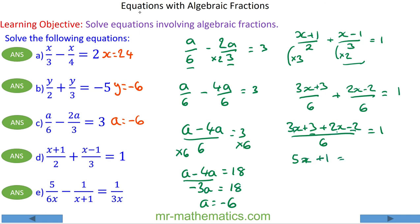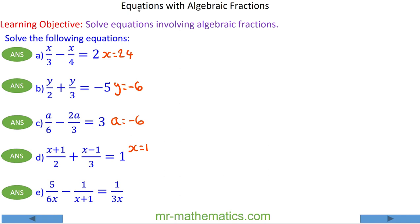So 3x add 2x equals 5x, 3 take away 2 is 1, and that is equal to 6. I can move the division of 6 to the other side, so 5x will equal 5 and x will equal 1.